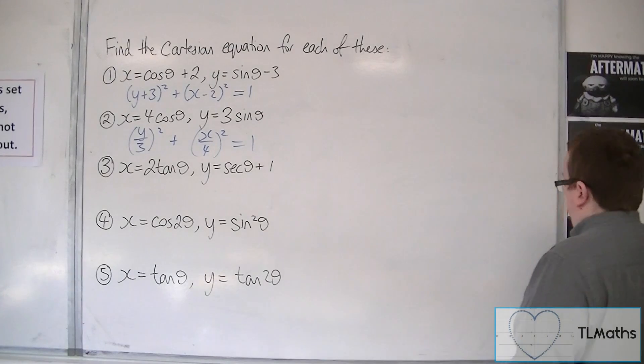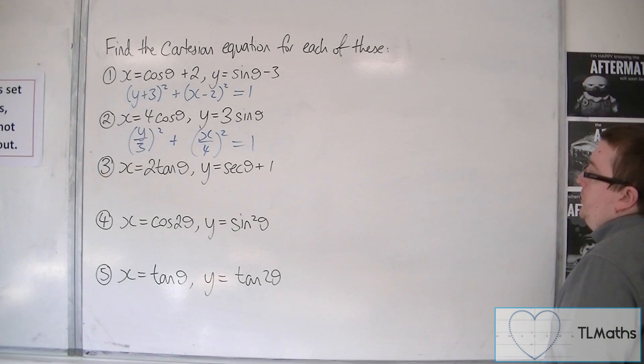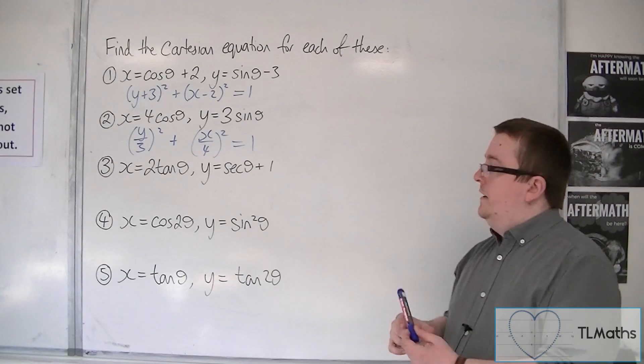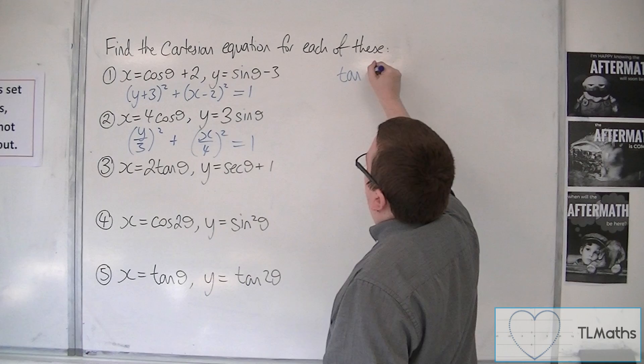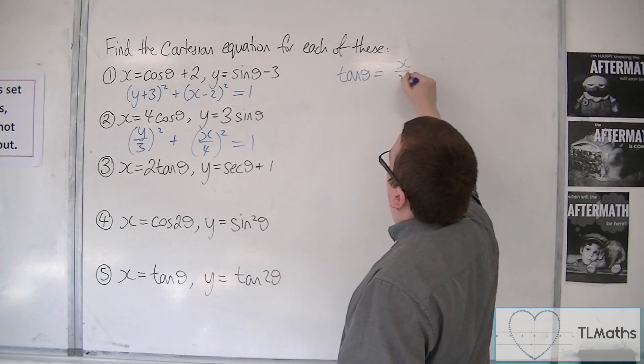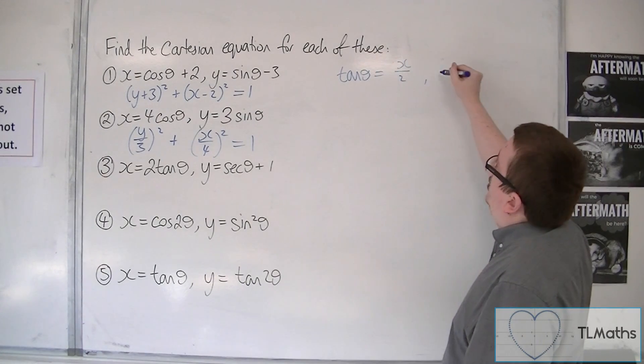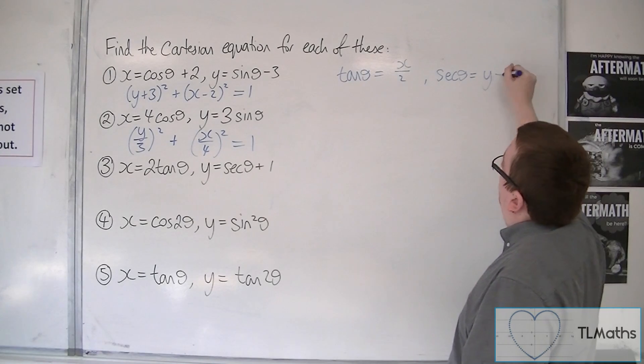Now for the next one, we have x equals 2 tan theta and y equals sec theta plus 1. So let's go with a similar kind of arrangement. That means that tan theta is x over 2, and sec theta is equal to y minus 1.